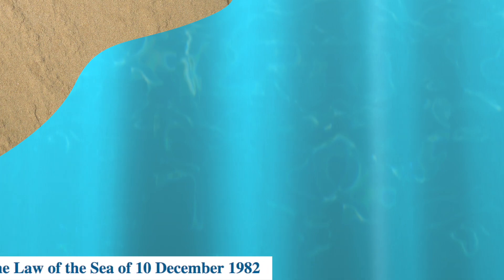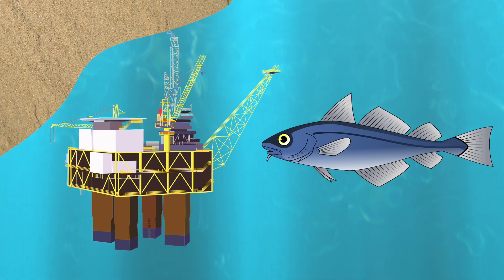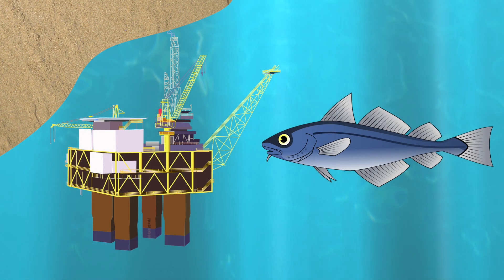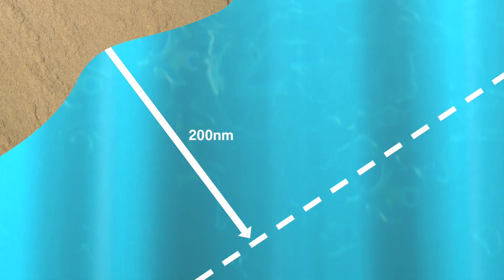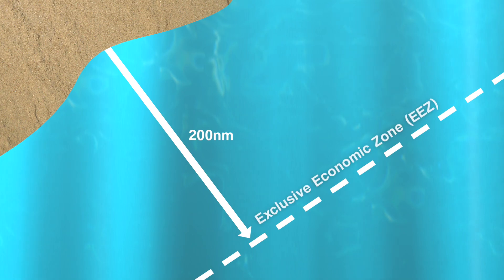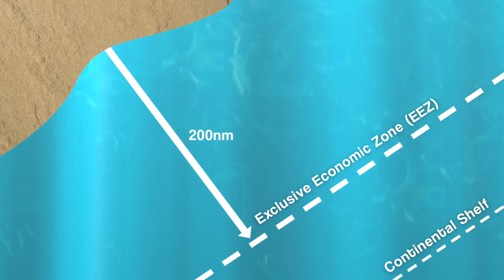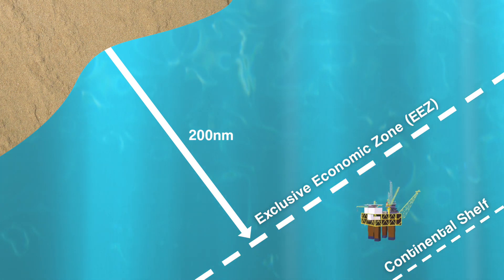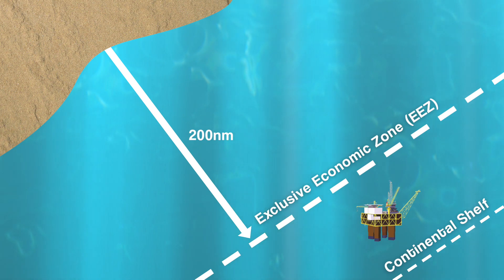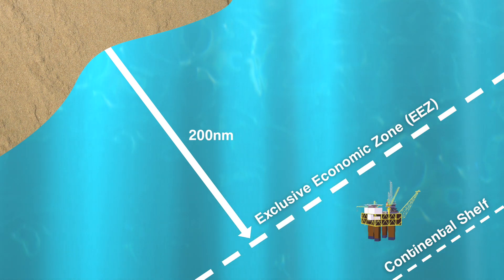As I've described in previous videos, the UN Convention on the Law of the Sea gives countries exclusive rights to all natural resources, including fishing and drilling, in a 200 nautical mile distance from their coastline. This is the exclusive economic zone. If their continental shelf extends beyond 200 nautical miles, countries can also get an extension to their exclusive rights to their seabed and below, through a separate application to the UN.